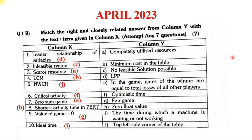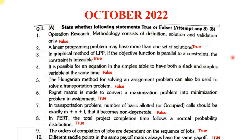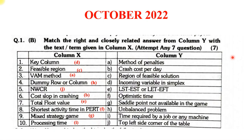That was the April 2023 paper. Now let us see the next paper — October 2022. These are the questions from October 2022 based on True or False. You can go through them and take a screenshot. Along with True or False, the next thing asked in this paper was Match the Columns. Again, the answers have been marked — you can go through it and take a screenshot.